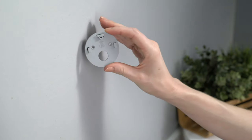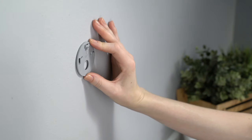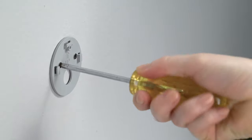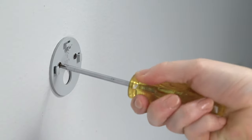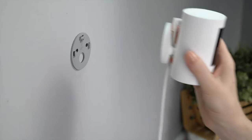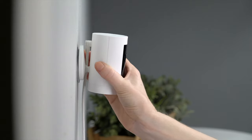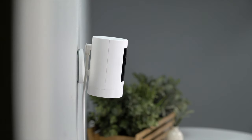Now hold the mounting bracket against your wall with the up arrow pointing upwards and mount it on your wall with the included screws. Next, slide your Stick Up Cam onto the bracket by guiding the grooves in the base onto the hooks in the mounting bracket.